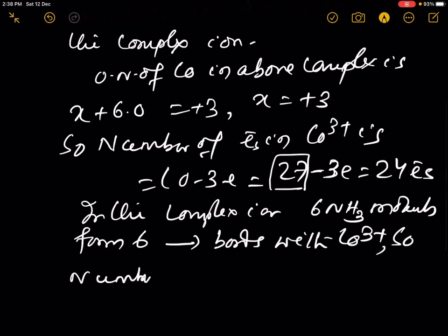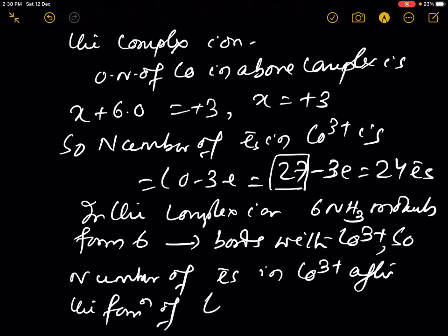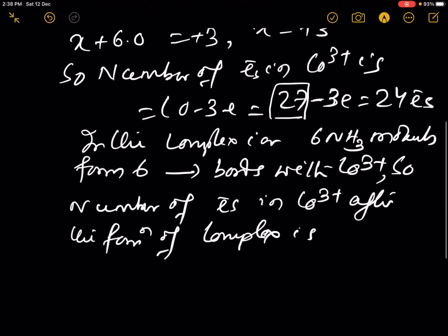The number of electrons in Co3+ after the formation of the complex ion is 24 plus 6 times 2, which equals 24 plus 12 equals 36.